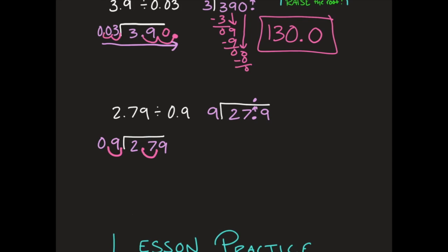If your decimal is in the house, raise the roof — put it right there. Now I'm going to do my division problem. 9 can't go into 2, but it can go into 27 — 3 times. 3 times 9 is 27, subtract and get 0. Bring down the next digit, which is 9. 9 goes into 9 one time, 1 times 9 is 9, subtract and get 0. Your answer is 3 and 1 tenth.